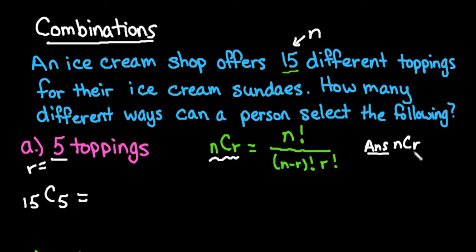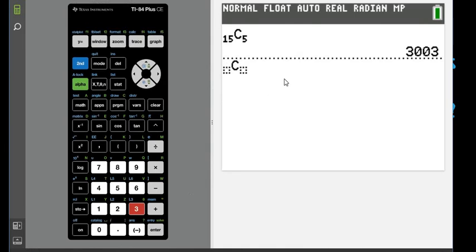So if this shows up for you, what you want to do is type in the 15 before going and finding the nCr and then put in the 5 afterwards. So depending upon your operating system that you have in your calculator, that's what you would do.